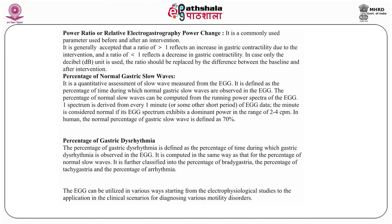A minute is considered normal if its EGG spectrum exhibits a dominant power in the range of 2 to 4 CPM. In humans, the normal percentage of gastric slow waves is defined as 70%. The percentage of gastric dysarrhythmia is defined as the percentage of time during which gastric dysarrhythmia is observed in the electrogastrography. It is computed in the same way as the percentage of normal slow waves, and is further classified into the percentage of bradygastria, the percentage of tachygastria, and the percentage of arrhythmia.